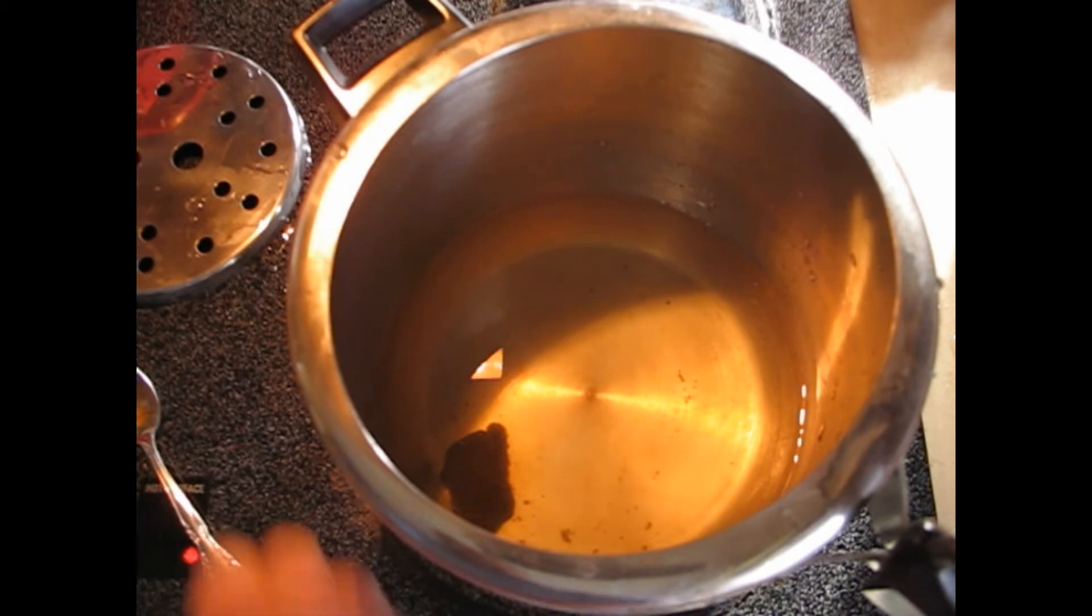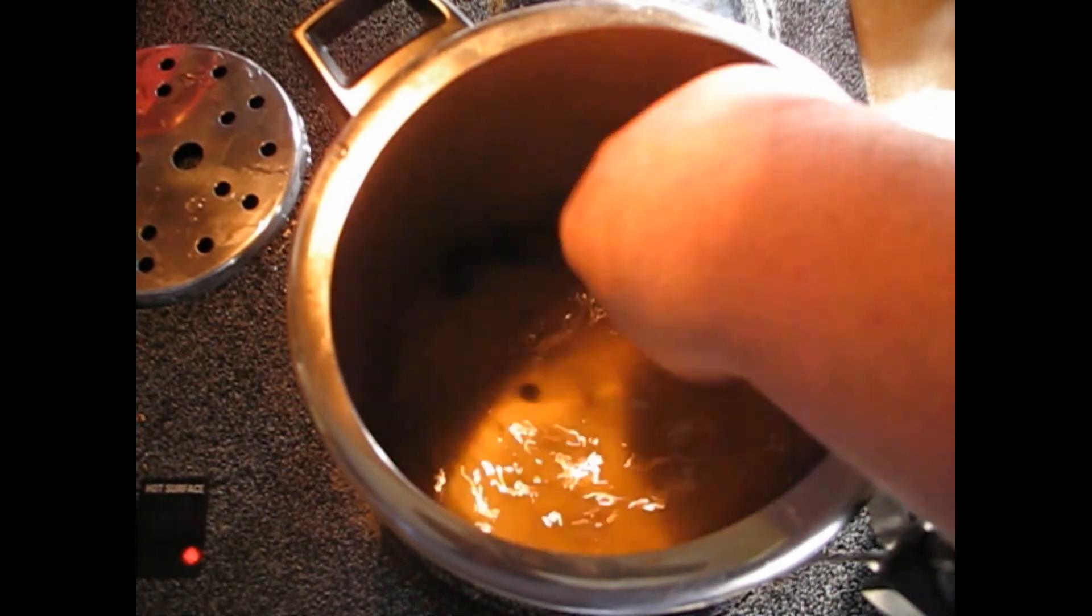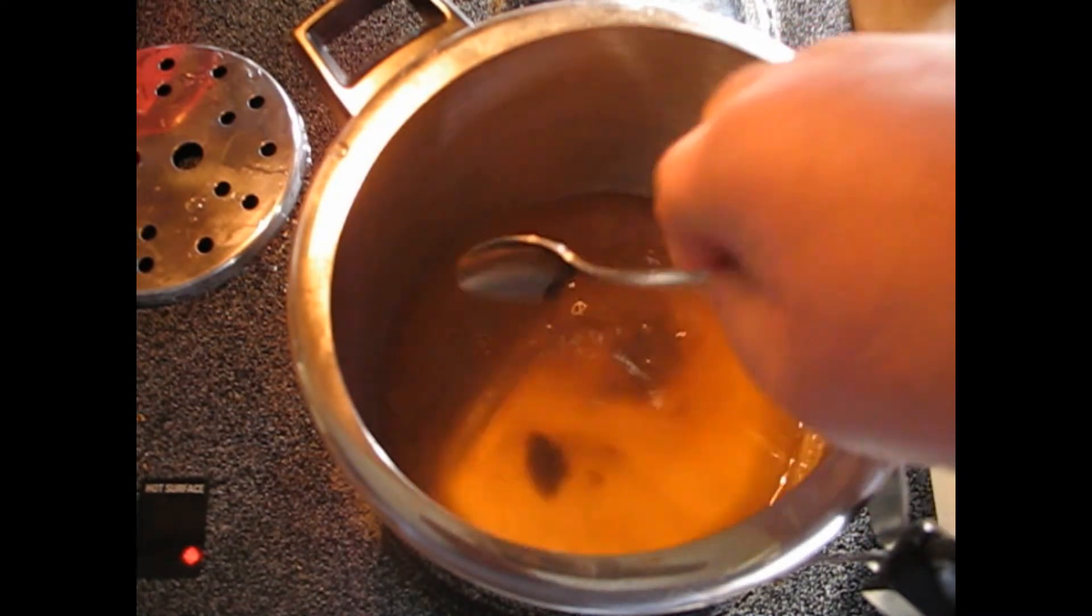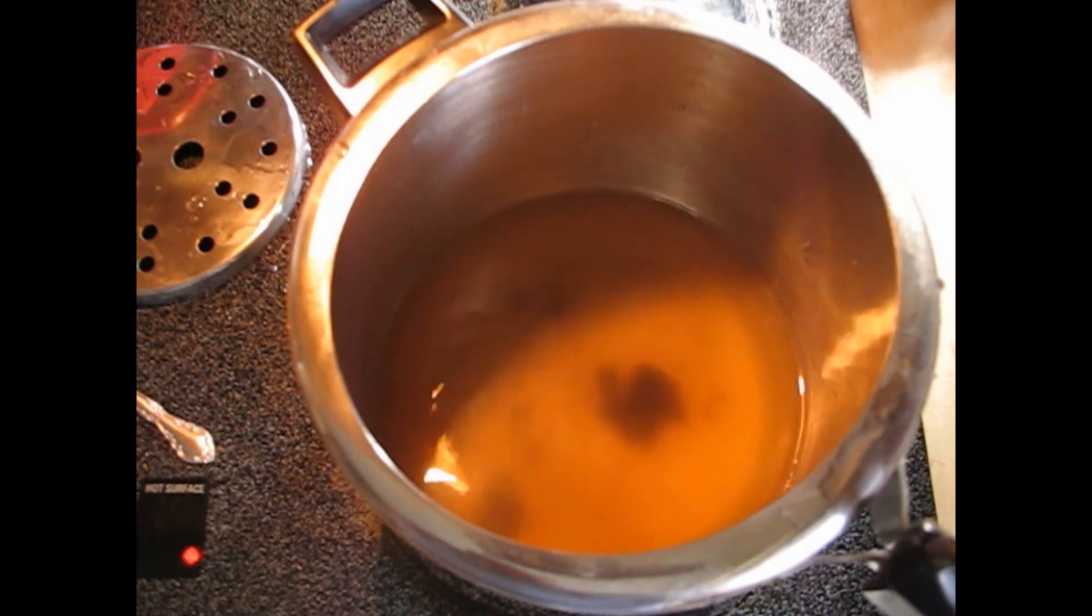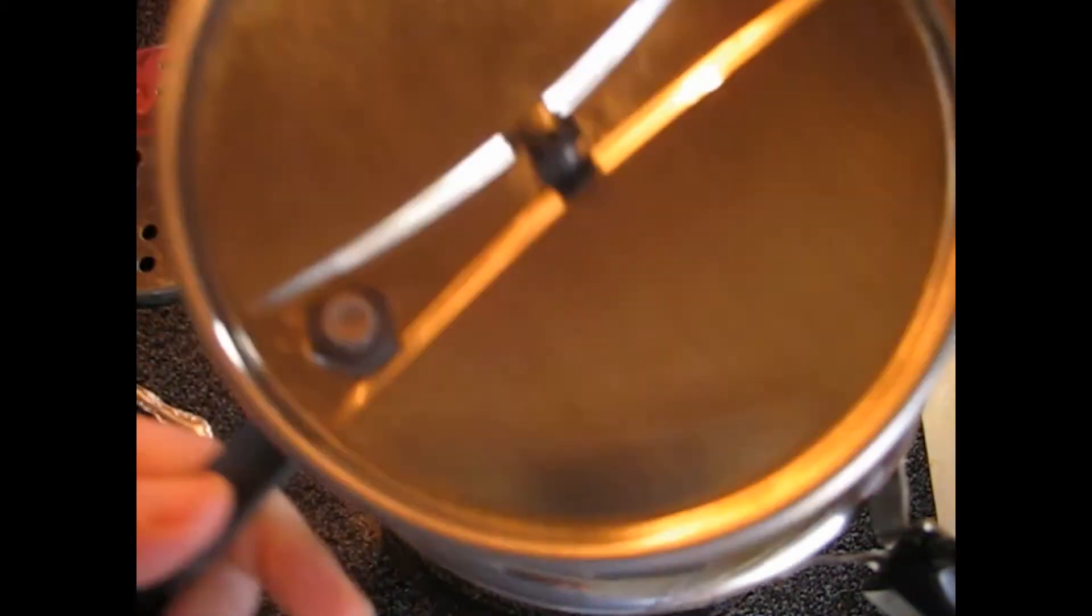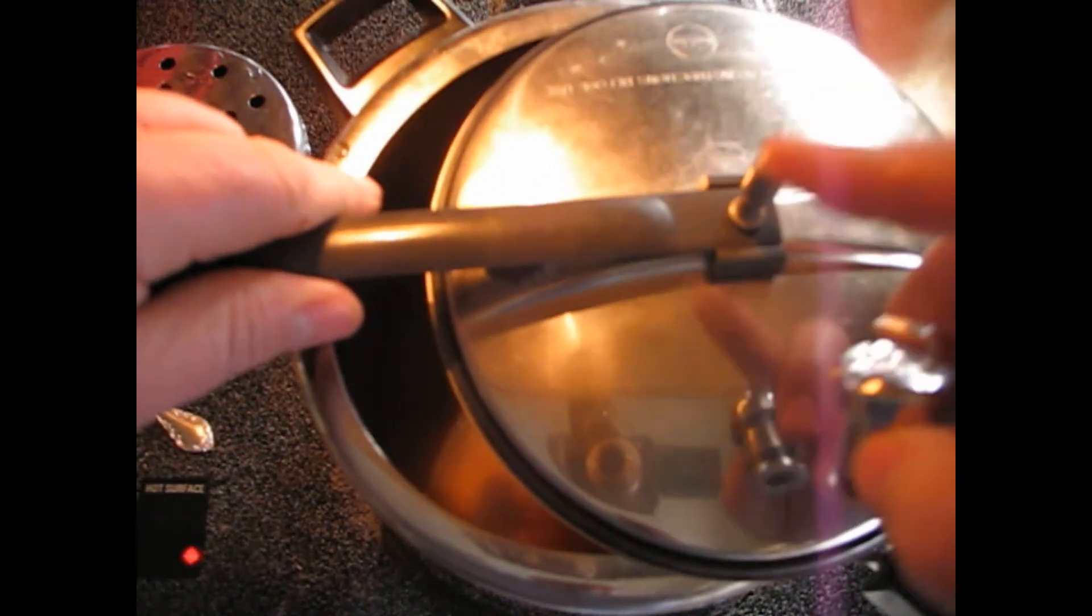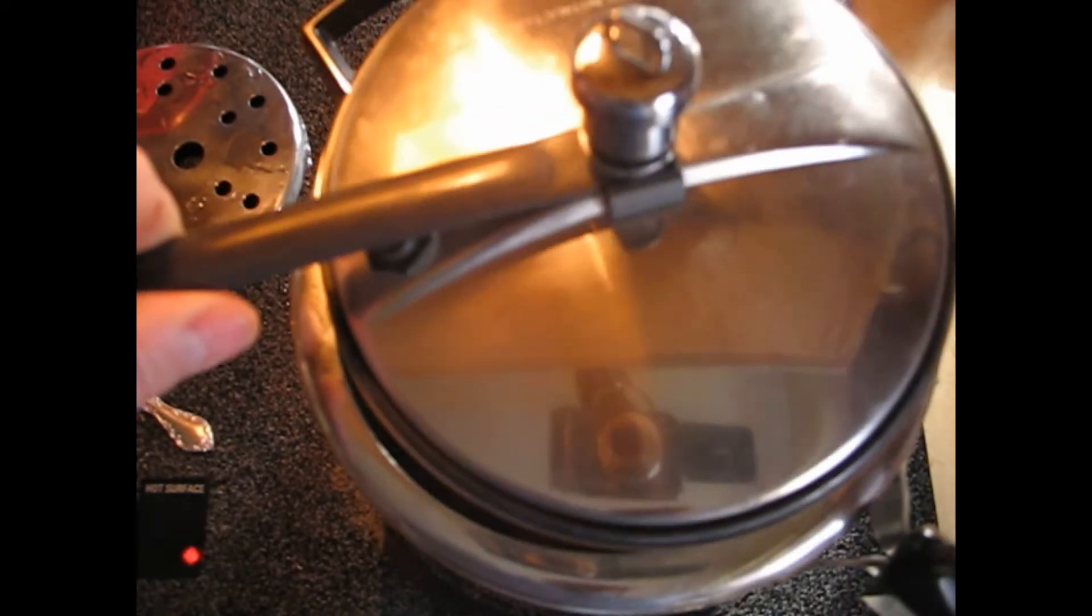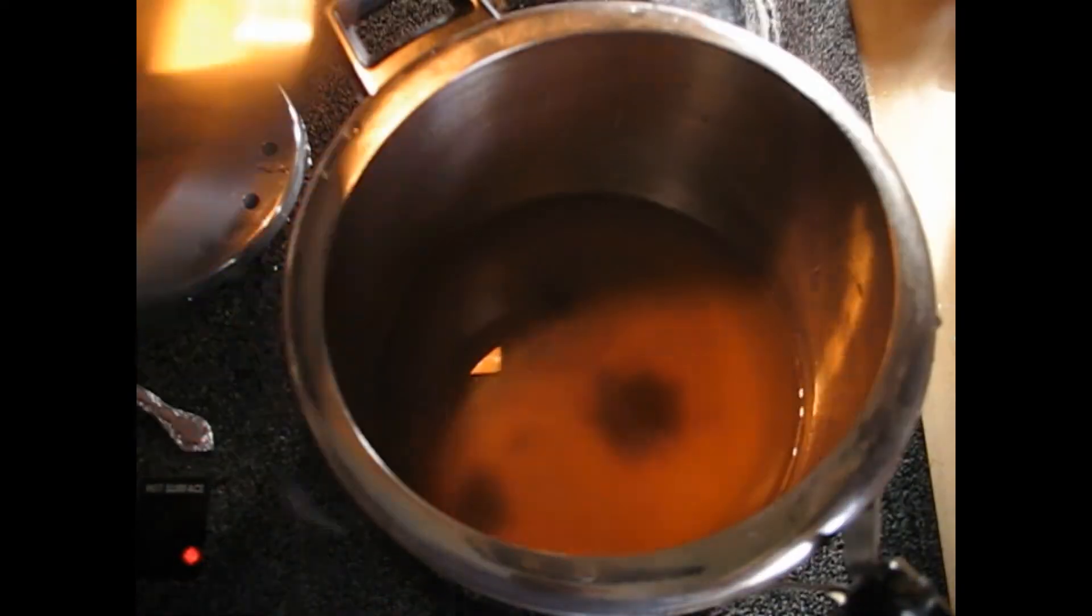I'll wait for that to come up to a boil. I'll show you the other piece of the pressure cooker. This is a very simple pressure cooker, has a measured weight that sits over top of this orifice here, and it's mathematically calculated so that it takes just about 12 to 15 pounds of pressure to lift this weight up and let some of the steam escape.